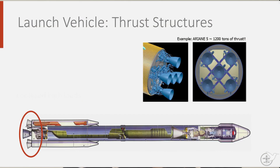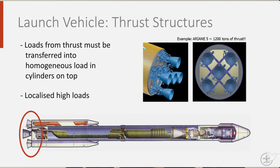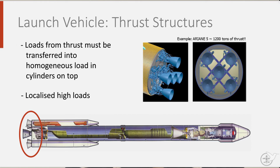Thrust structures transfer the enormous thrusts from the engines to the main stages of the launcher. To put a number on it, the European Ariane 5 rocket produces 15,000 kN at liftoff. This concentrated load must be distributed into the space structure via a conical structure.